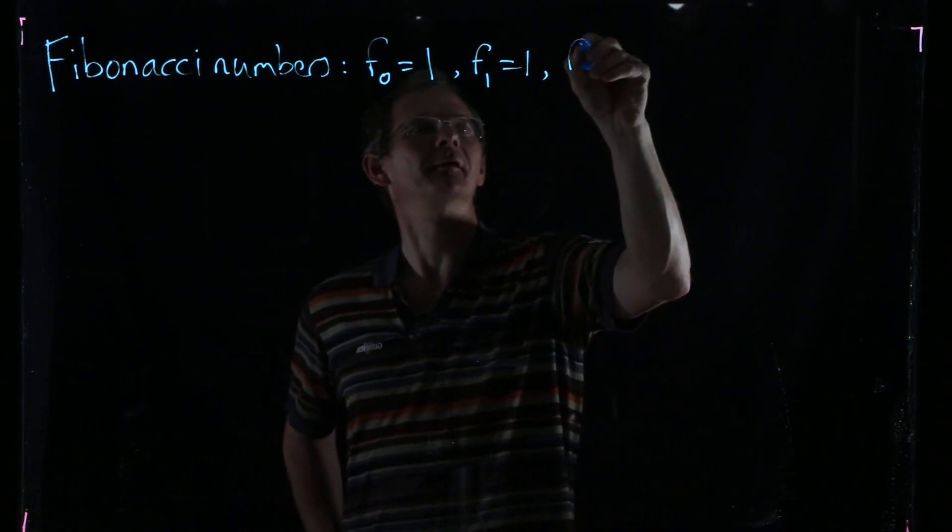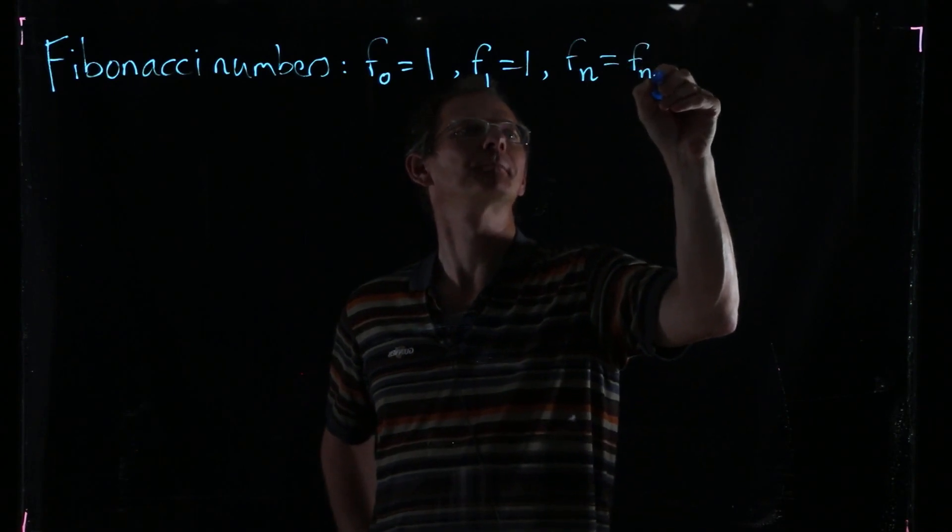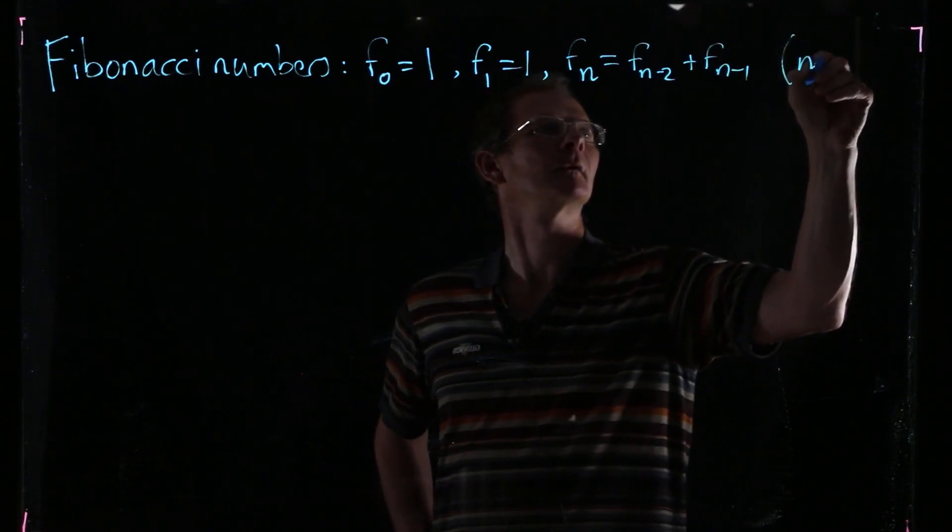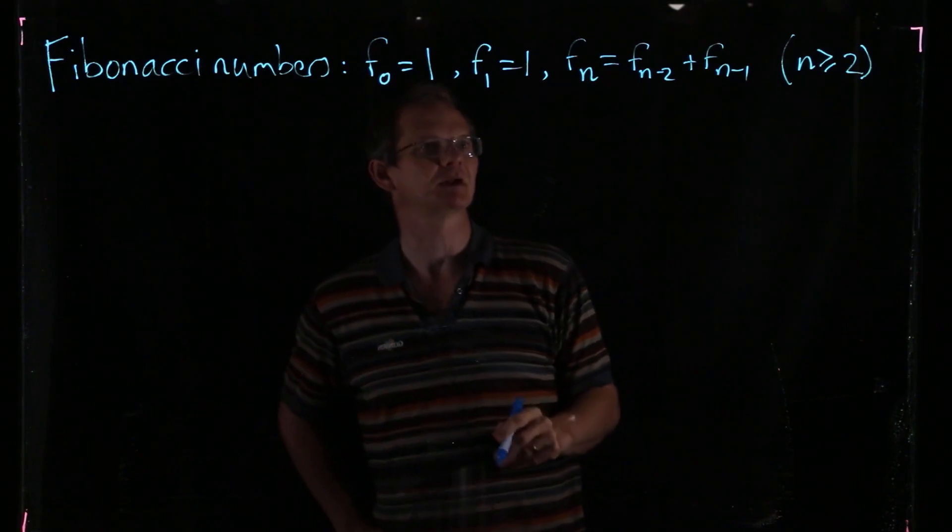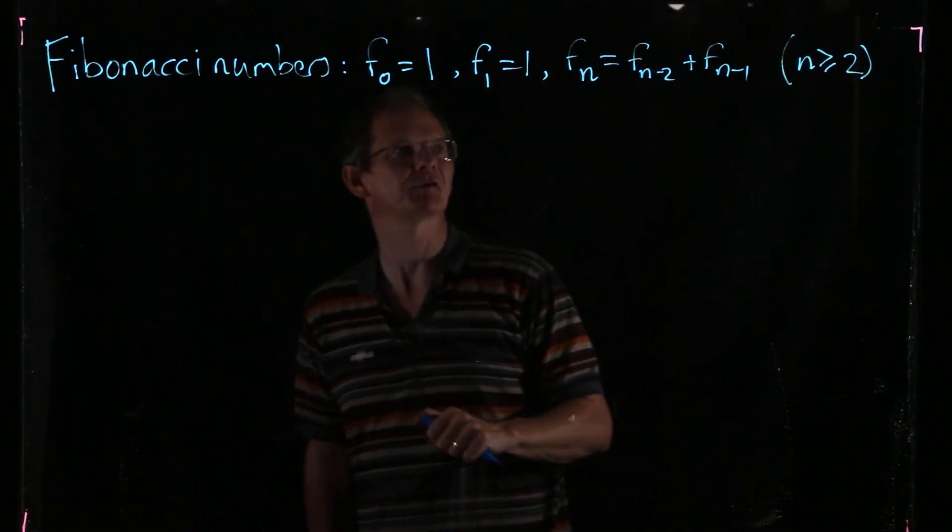And the general rule is that Fn is going to be the sum of the previous two. For n at least 2, we define Fn to be Fn-2 plus Fn-1, the sum of the previous two Fibonacci numbers.